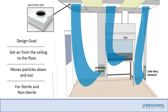USP 797 states that HEPA filtered air must be introduced at the ceiling. One project attempted to introduce HEPA filtered air from the makeup air unit, but it had to travel 30 to 40 feet down the supply ductwork and could not pass particle counts by the time it reached the room — which USP 797 would have debunked anyway. HEPA filtered air must be introduced at the ceiling.